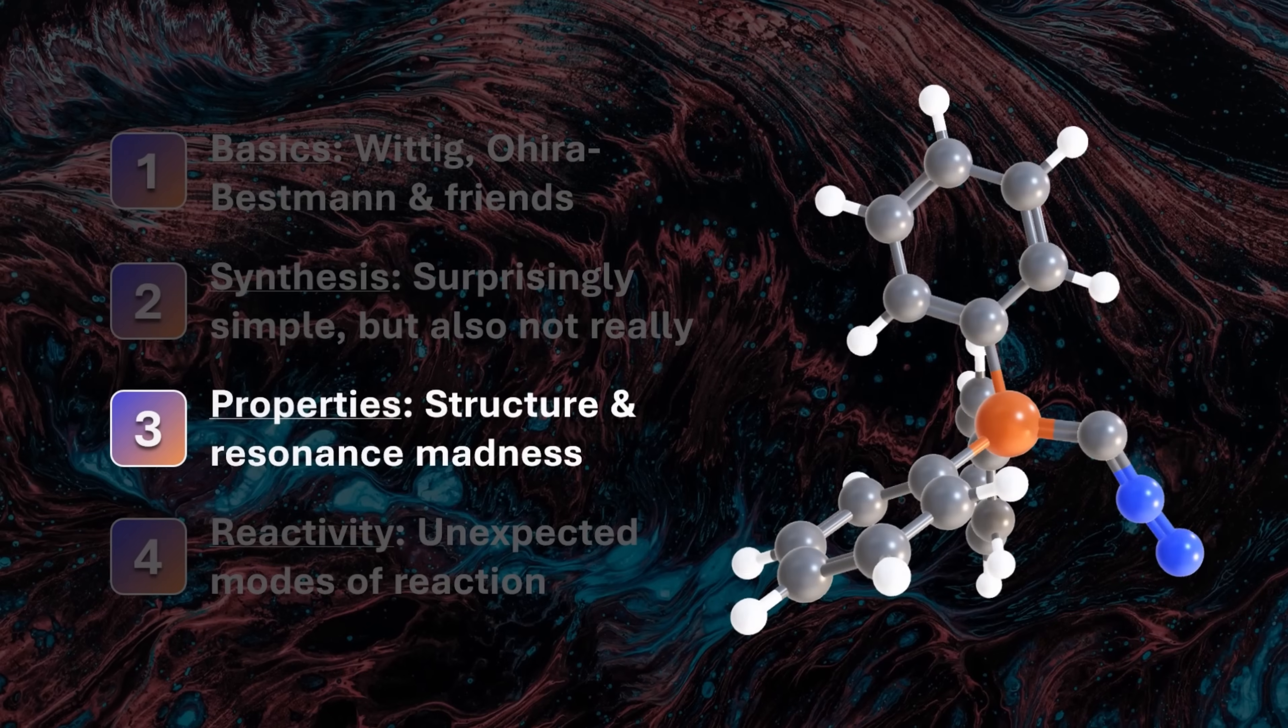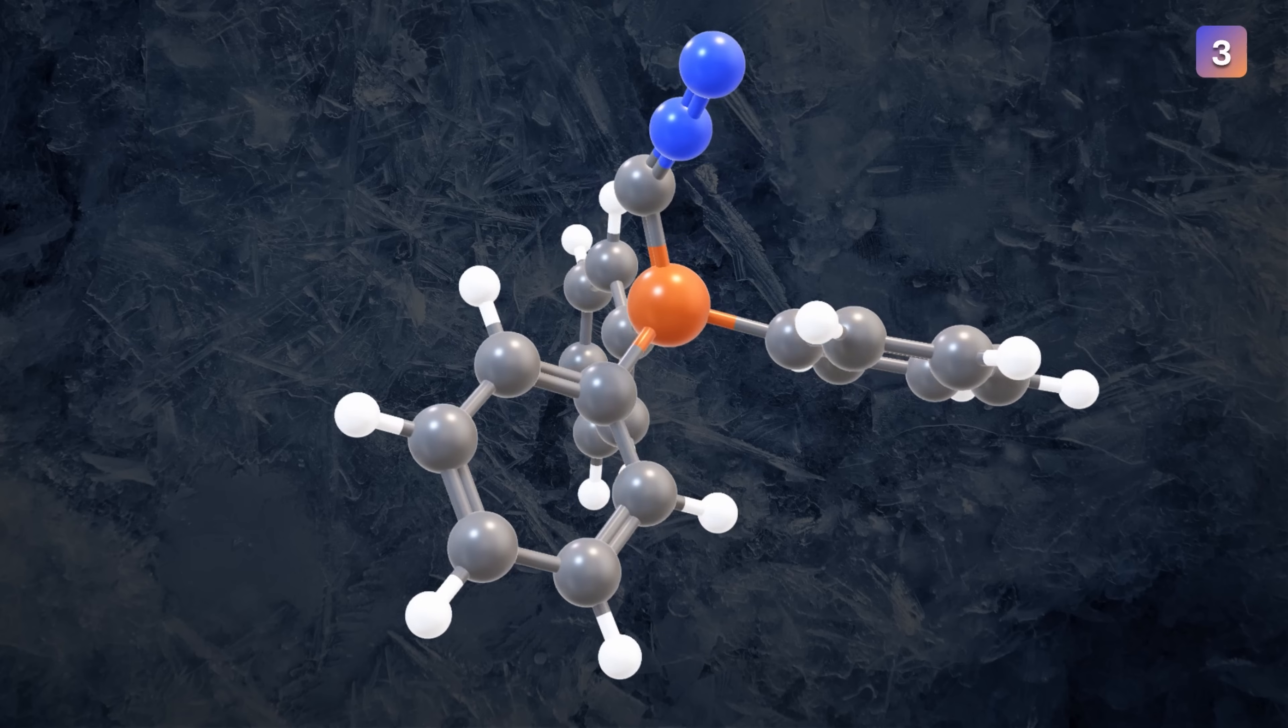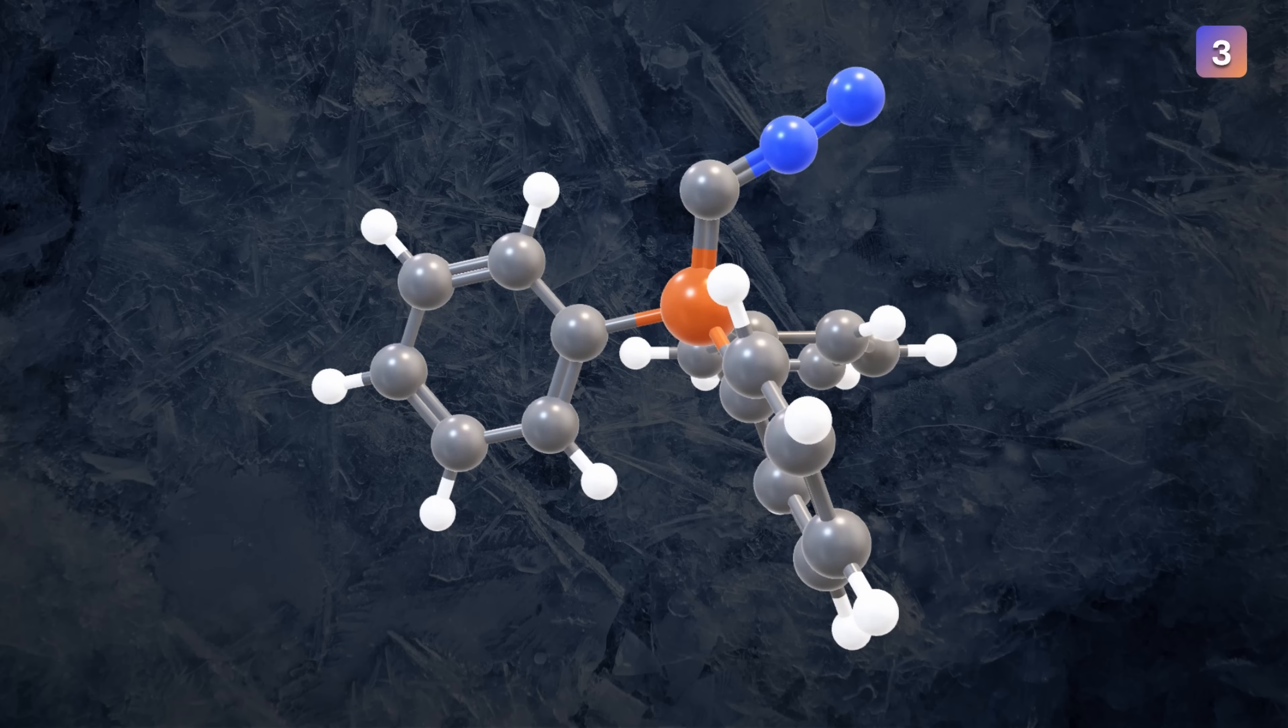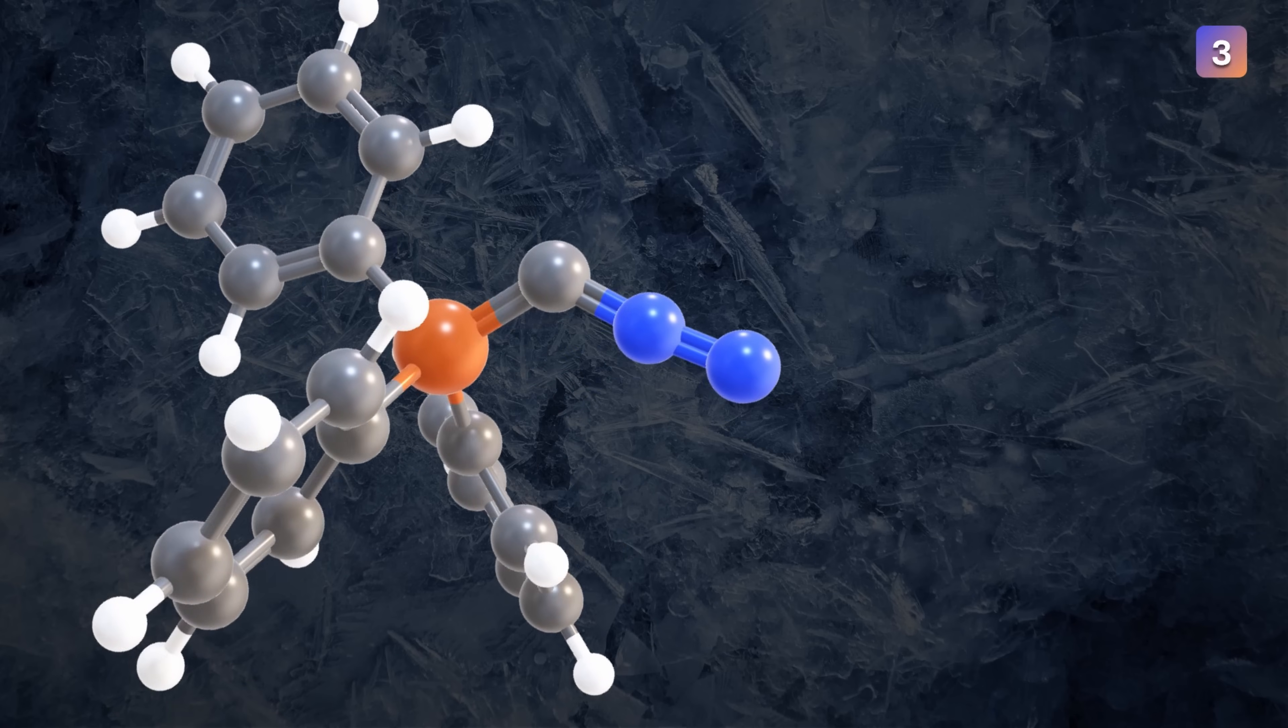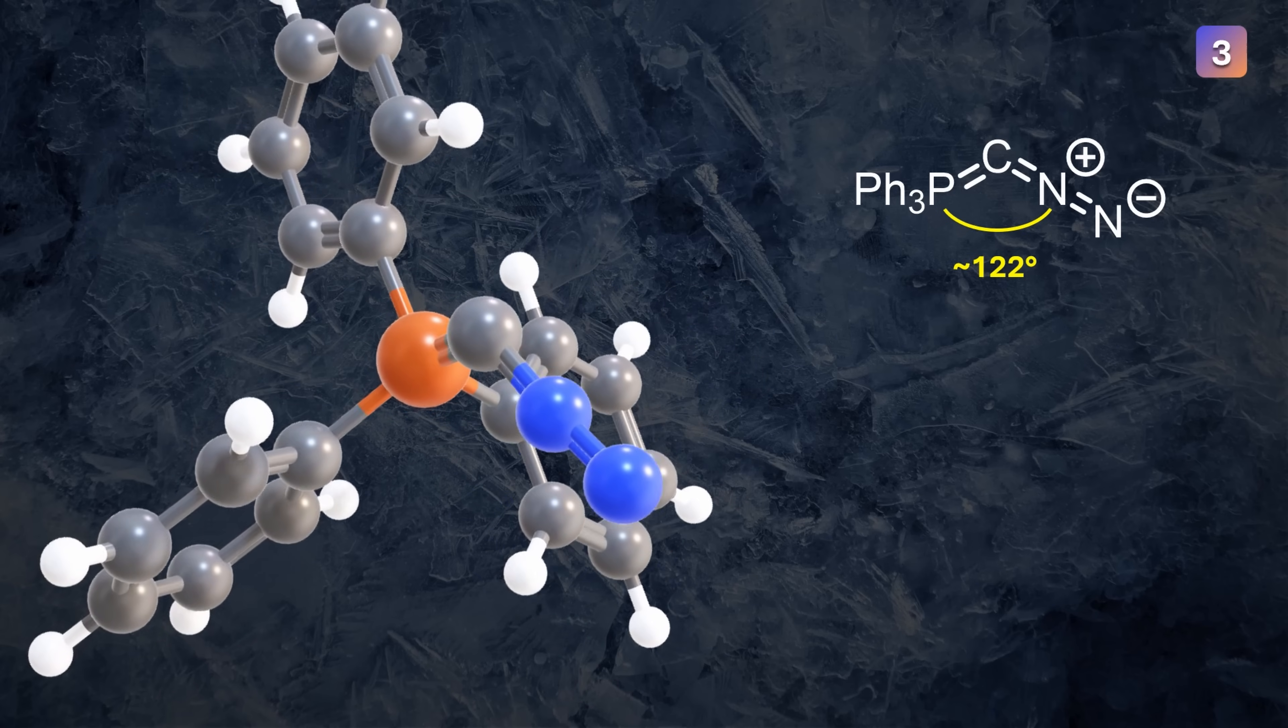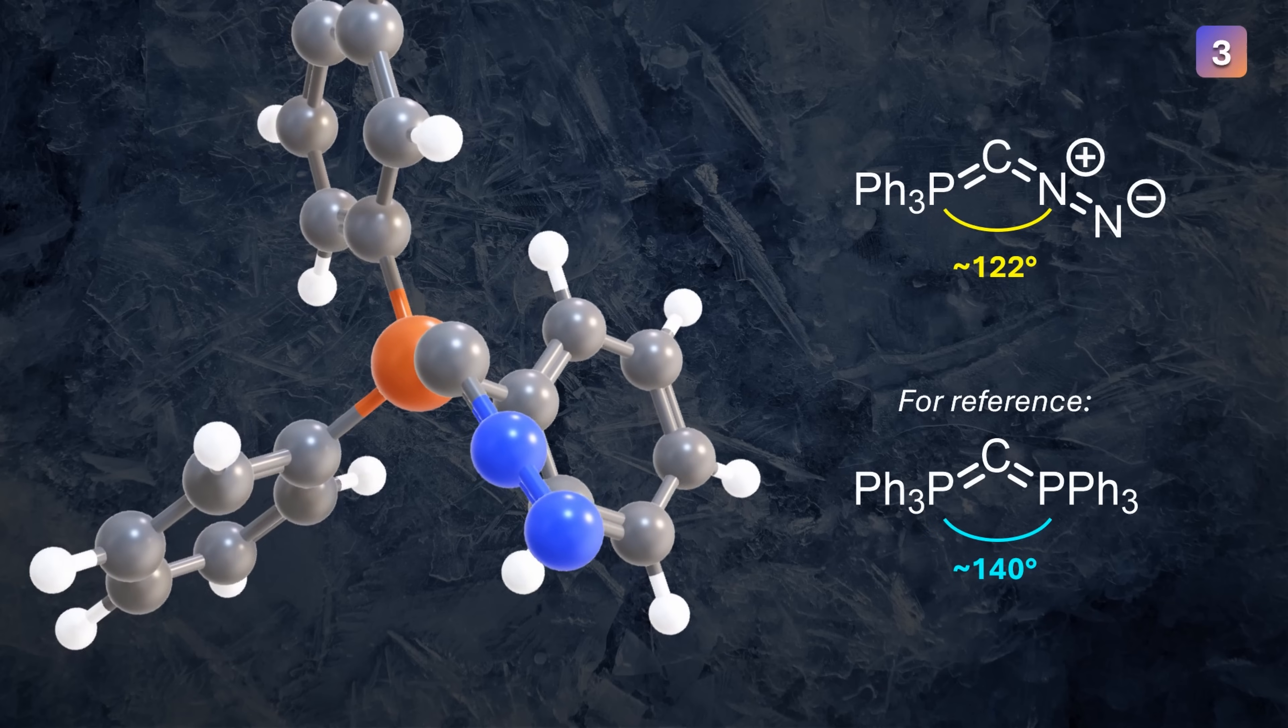Recrystallization of the product from toluene at room temperature gave single crystals suitable for X-ray analysis. If you are a total noob, you should first of all note that the phosphorus is not planar, but tetrahedral, with the phenyl groups oriented in a way that minimizes steric interactions. The hetero-cumulenic structure is not fully linear, but rather bent at carbon with an angle between P, C and N of roughly 120 degrees. As a side note, this is significantly more bent than the precursor diphosphorane that we saw earlier, which has an angle between P, C and P of 140 degrees.